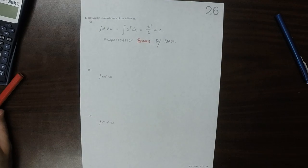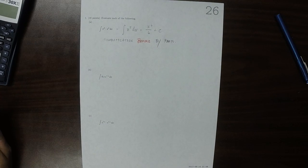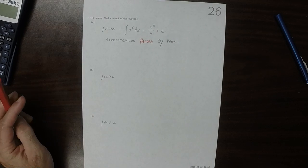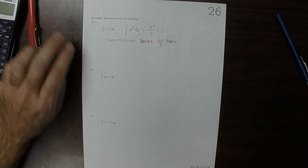So again, here on this one, we see a product. However, this is the product of a polynomial 8x and an exponential, and that cannot be simplified.